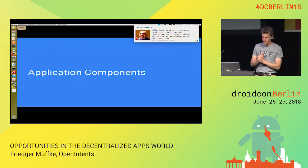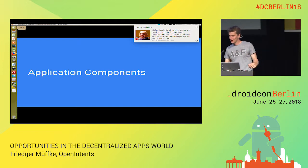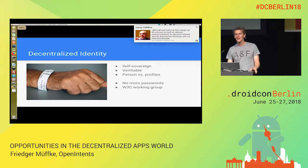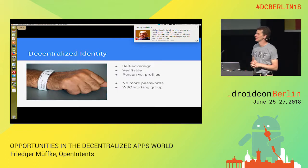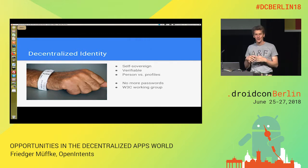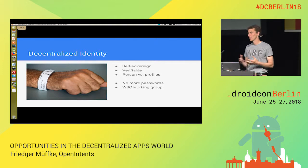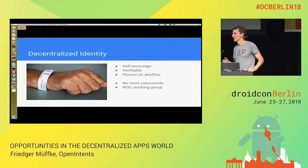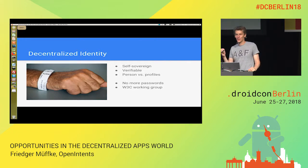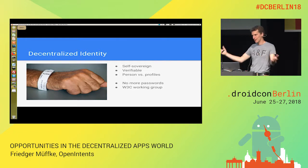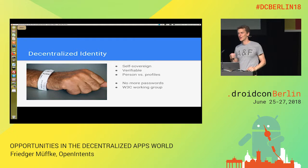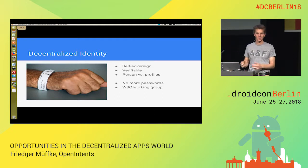Starting developing apps — I think there are three main application components you can incorporate. The first is decentralized identities. It's about how the user authenticates to your application. The important thing is that it's self-sovereign, so the user can create an account, an identity, a profile, without a third party. Furthermore, all other users in the network can verify this user without a third party.